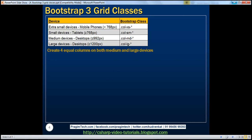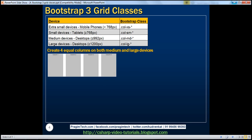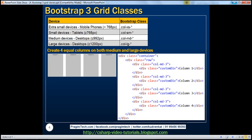Here is what we want to do. We want to create four equal columns on both medium and large devices. To achieve this, I'm going to use four divs, and for each div, the class is going to be col-md-3. Notice I'm using 3 instead of star because we want four equal columns, each column spanning across three columns within the 12-column Bootstrap grid system.